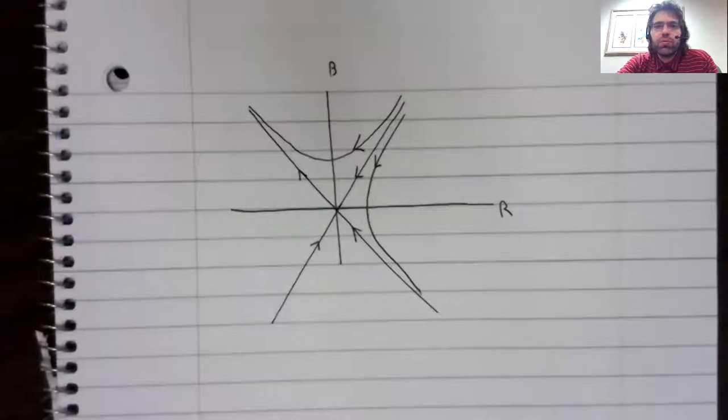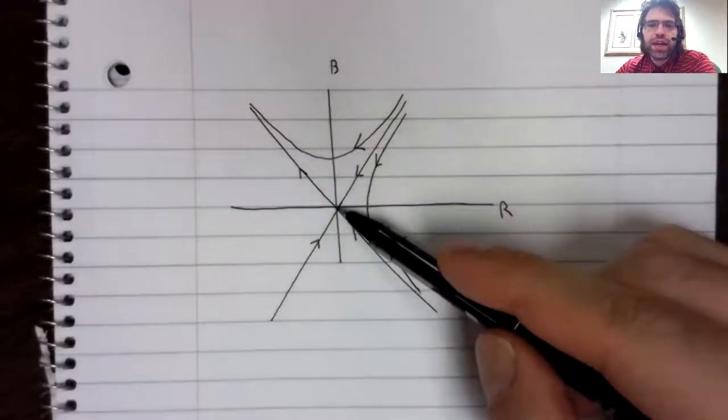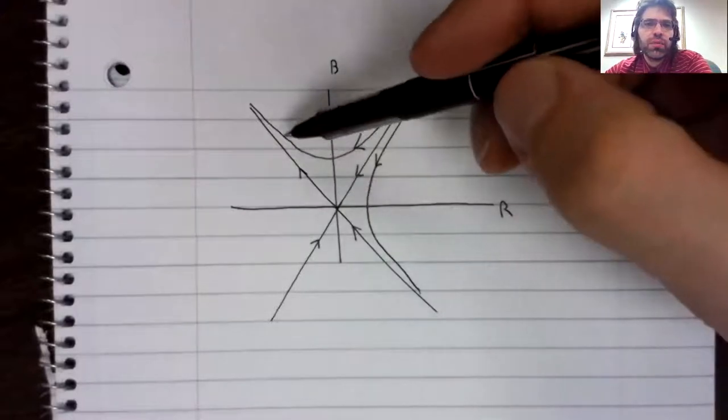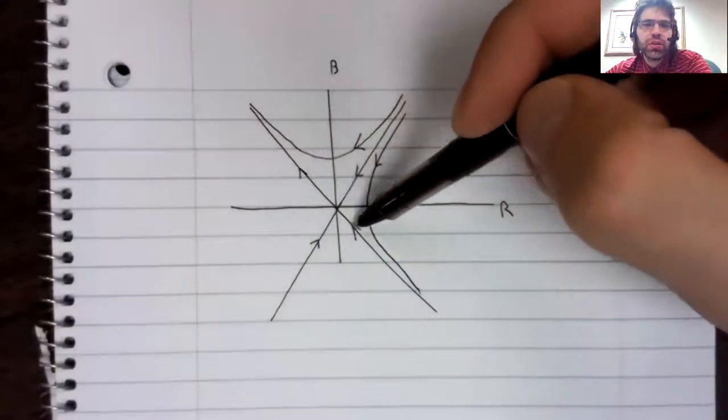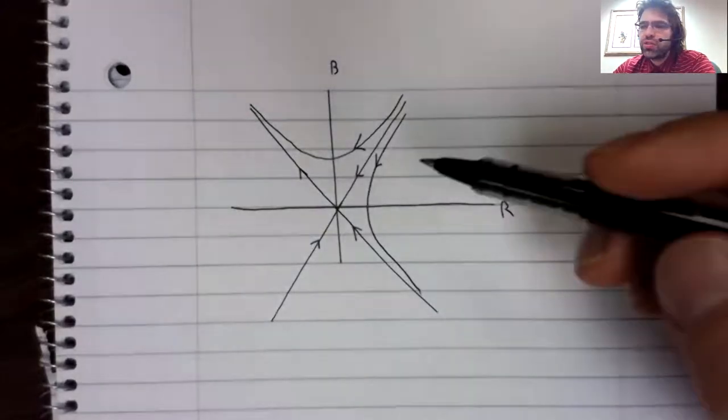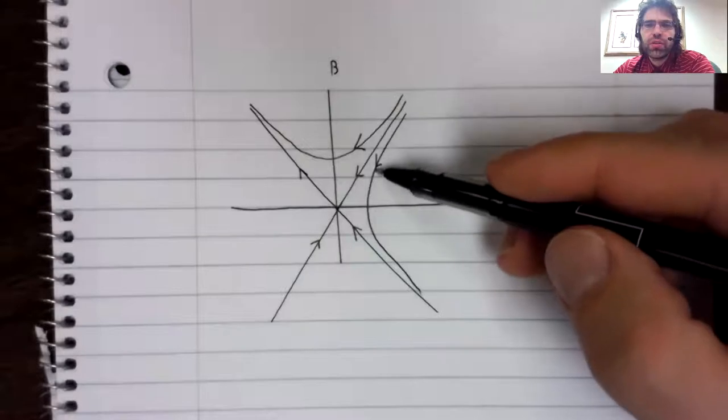We found that the origin is an unstable saddle with an eigenvector here and an eigenvector here. And trajectories follow the eigenvectors in the familiar way.